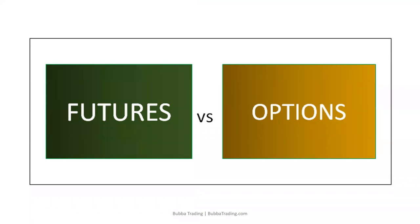The difference between futures and options is dramatic from a day trading perspective. Because of implied volatility, it can expand and contract during the day. The bid-offer spread gives up a dramatic amount of potential profit no matter what you're trading in options. In futures, the bid-offer spread is one tick wide — they're not affected by volatility or anything else. The formula for futures trading versus options: futures are always going to be the same spread.